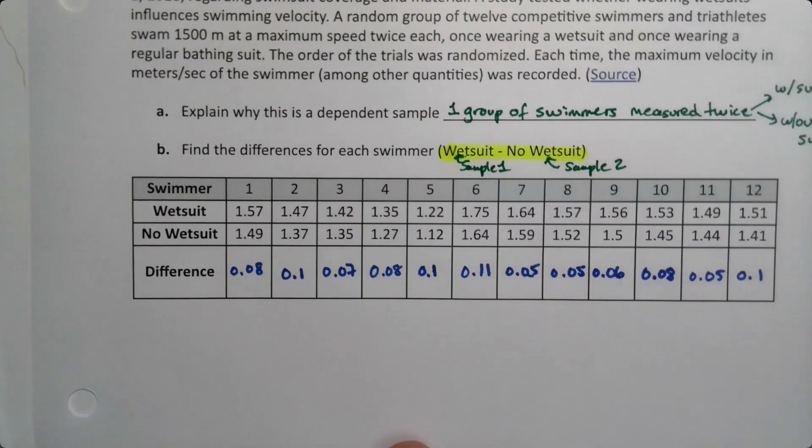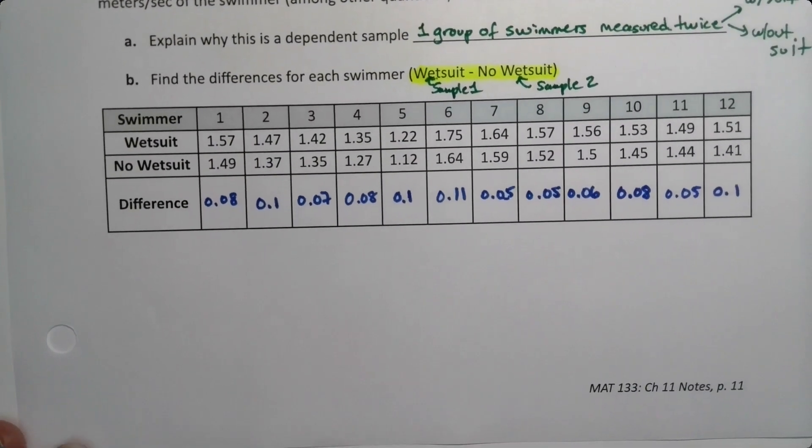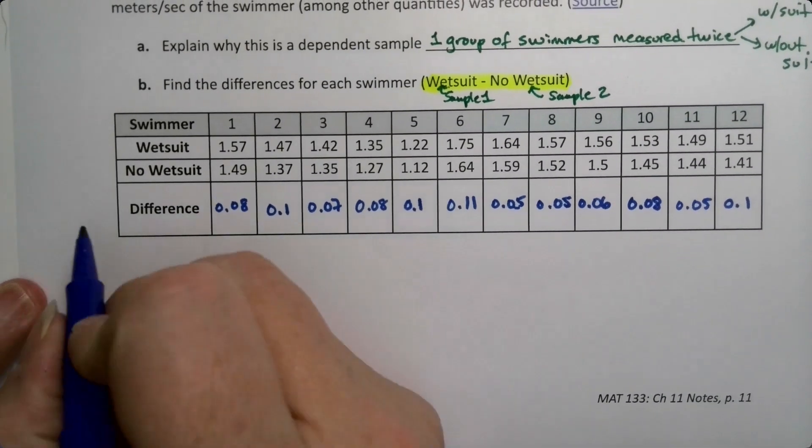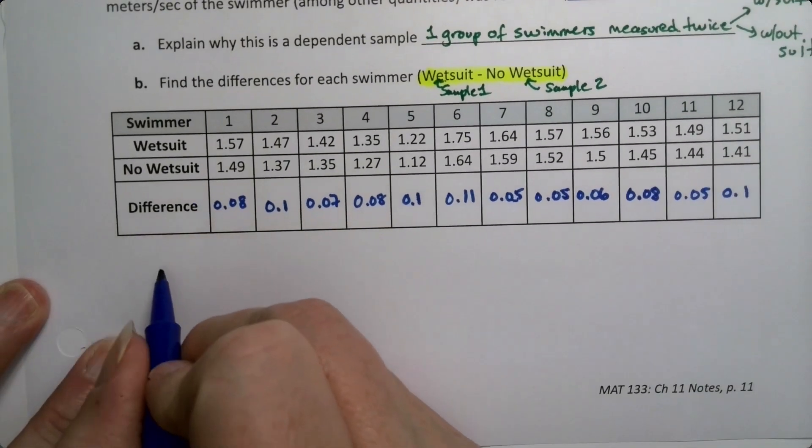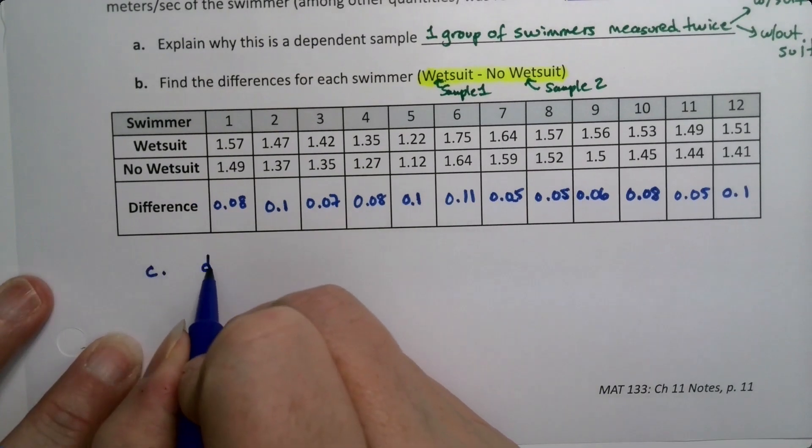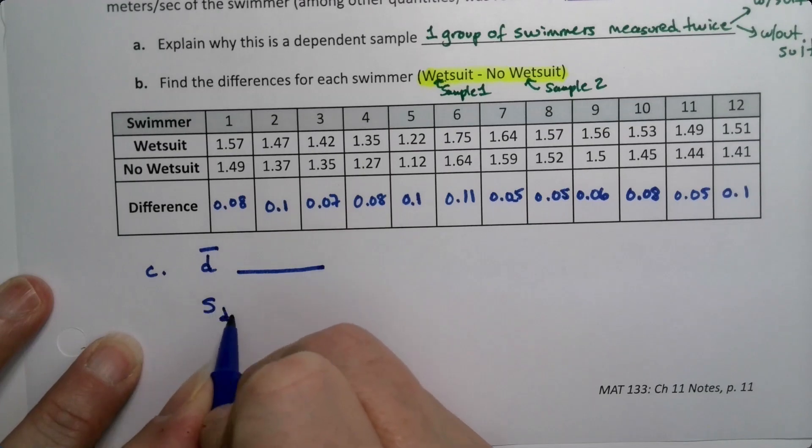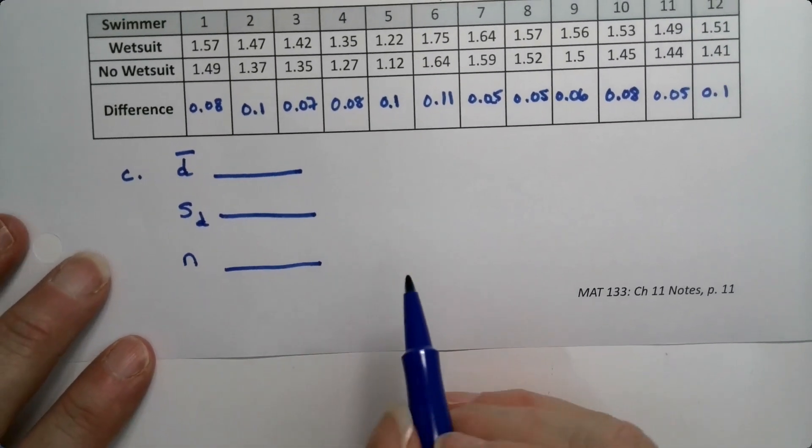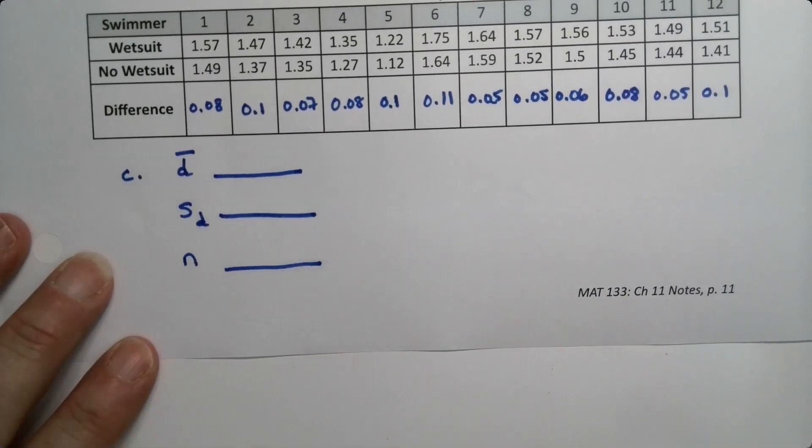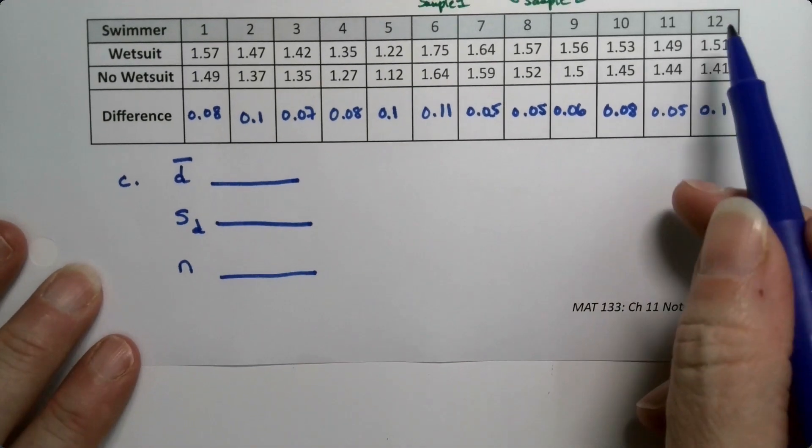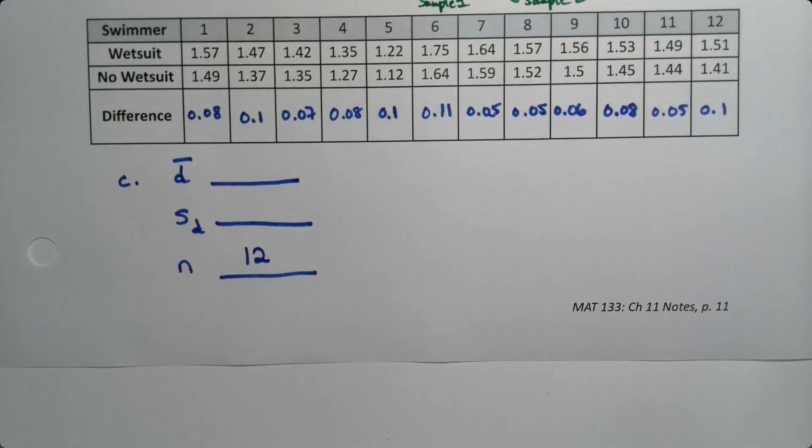I didn't ask for it but I probably should have just for practice, so I'm going to add in a new letter C. This is going to be find D-bar, SD, and n. Well, n is really easy, there's 12, there were 12 pairings here.